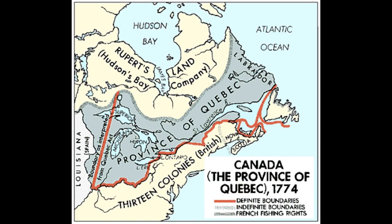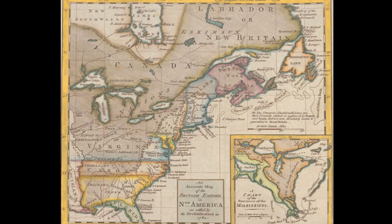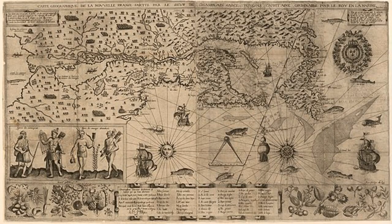The Quebec Act of 1774 was a major piece of legislation passed by the British Parliament during the early stages of the American Revolution. It was designed to address a number of issues related to the governance of the province of Quebec, which had been ceded to Britain by France in 1763 as part of the Treaty of Paris. It was met with considerable opposition in the American colonies, as it was seen as an attempt by the British to subvert the principles of self-governance that were at the heart of the American Revolution.